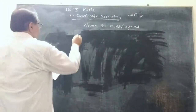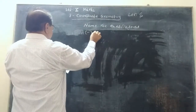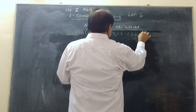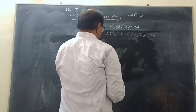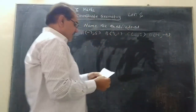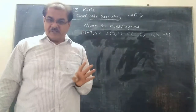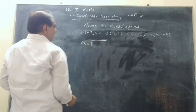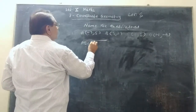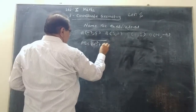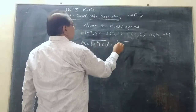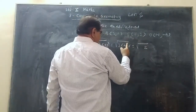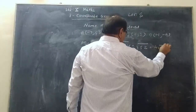We take one more. The second problem is: Point A(-3, 5), Point B(3, 1), Point C(0, 3) and Point D(-1, -4). Again the coordinates of the 4 vertices are given and you want to check what kind of quadrilateral it is. Same method. AB = √[(-3-3)² + (5-1)²] = √[36 + 16] = √52 = 4√13.